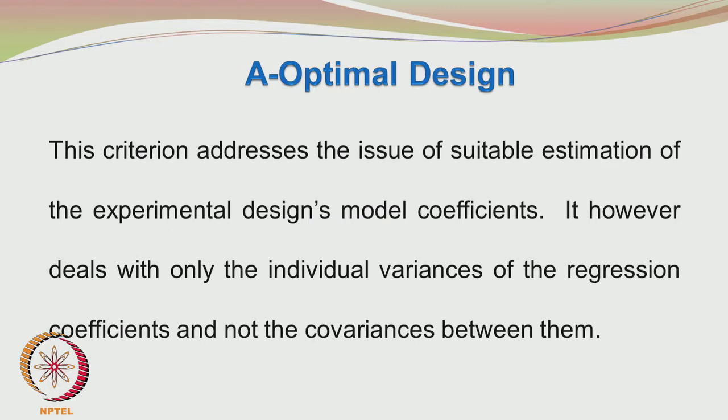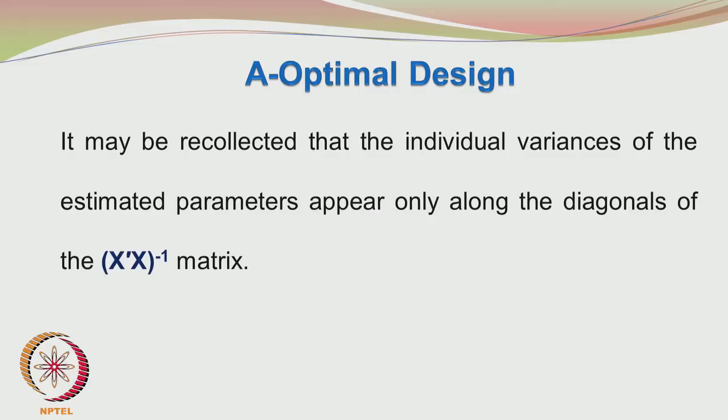Let us now look at another alphabetical optimal design, the A-optimal design. This criterion addresses the issue of suitable estimation of the experimental design's model coefficients. It deals with only the individual variances of the regression coefficients. To find the variance of the estimated parameters, we refer to the variance-covariance matrix and look at the diagonal terms, which are the variances of the regression coefficients. The diagonal elements have to be multiplied by sigma squared, the error variance, to get the variance of the estimated parameters.